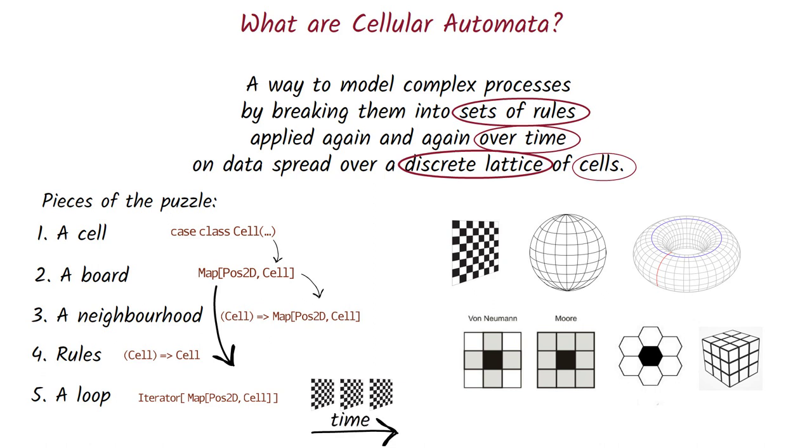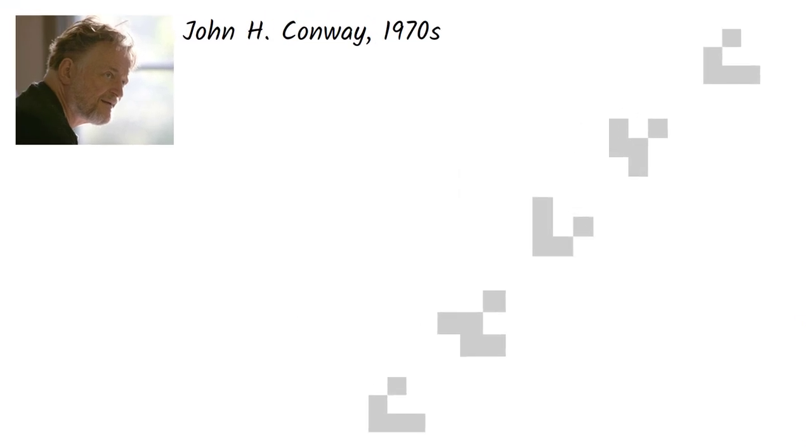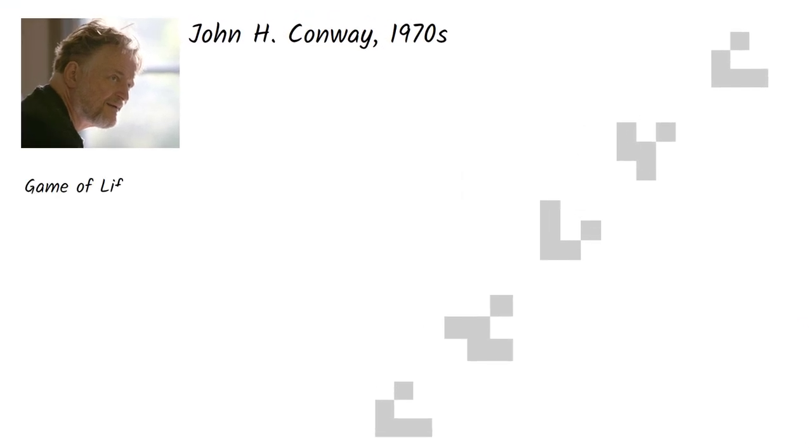Let's go again to the elements of the model in the same order. The cell, the board, the neighborhood and the rules. The loop is always the same. In the game of life, a cell holds only one bit of information, if it is alive or dead. Usually, we display alive cells as black and dead cells as white. Then there is the board. It's a two-dimensional board of any size. And the neighborhood is Moore's neighborhood, that is all eight cells that surround the central one.